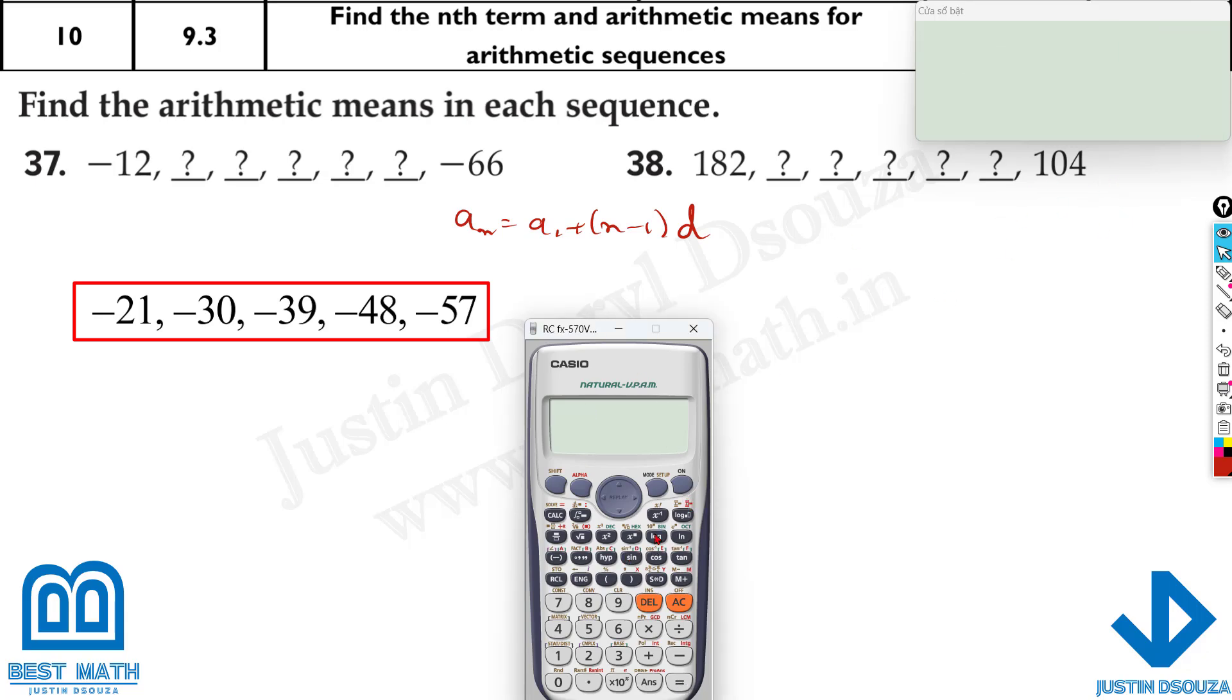Similarly, do this problem and then check your answers. I'll do it here. 104 equals 182 plus n minus 1. That is 1, 2, 3, 4, 5, 6, 7 terms. So it's 6 minus 1. Sorry. It's either 6 or 7 minus 1. That'll be 6 times x. Shift and solve and then press equal to. It's minus 13. So it'll be 182 minus 13. What is the answer? It's 169.